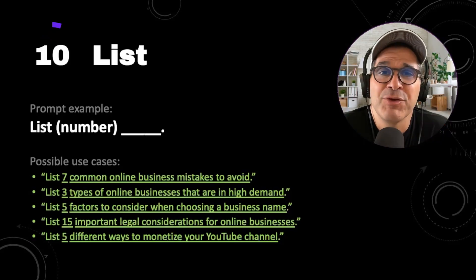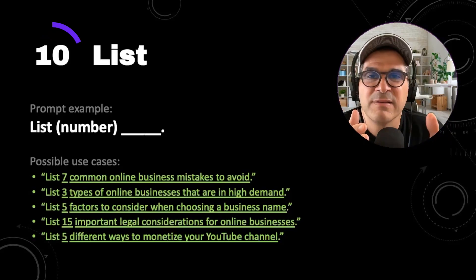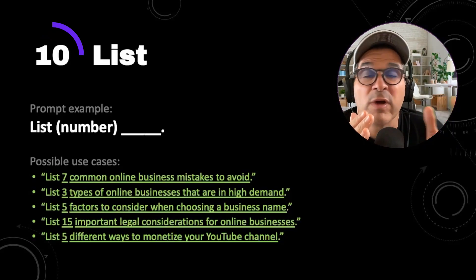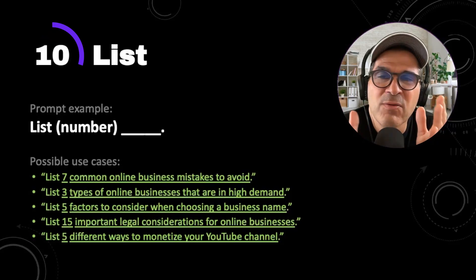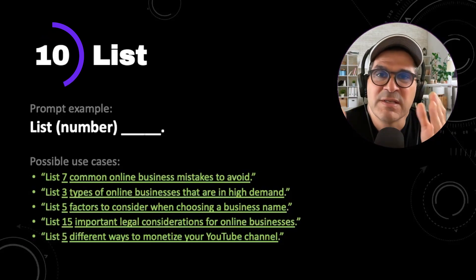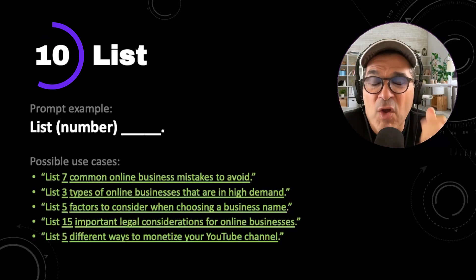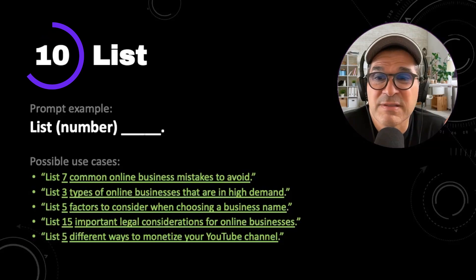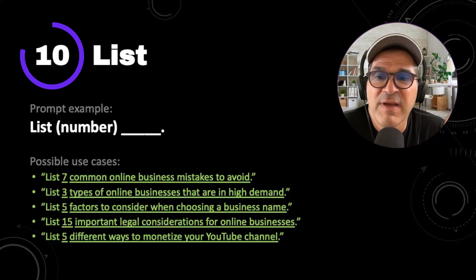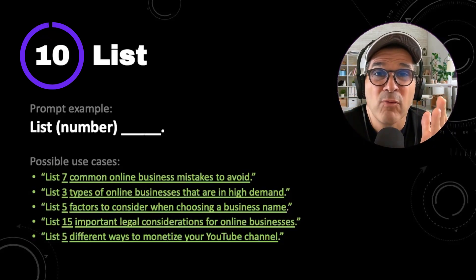Power prompt number 10 is list. When I make a list I like to go list number blank — specifying the number of items I want. There's a big difference between a list of 5,000 things and a list of three things. Sometimes a small list gets you the best results; other times when you're gathering big volumes of research you might want a larger list. Some examples: list 7 common online business mistakes to avoid, list 3 types of online businesses in high demand, list 5 factors to consider when choosing a business name, list 15 important legal considerations for an online business, or list 5 different ways to monetize your YouTube channel. But there's an even more powerful way to leverage lists — and that leads to the next prompt.